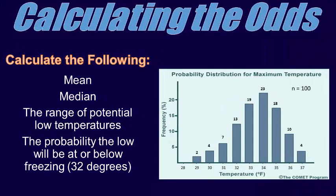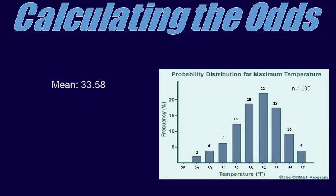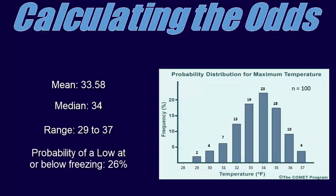Here is a look at the forecast low temperatures from 100 models. Take a moment to see if you can calculate the following: the mean, the median, the range of potential low temperatures, and the probability that the low will be at or below freezing, which is 32 degrees Fahrenheit. In this example, the mean is 33.58 degrees and the median is 34 degrees. This means that barring any known model bias or local knowledge, our forecaster may forecast a deterministic low temperature of 34. The range of potential outcomes goes from 29 to 37. Of the 100 forecasts, only 26 have a value at or below freezing, so the probability of low temperatures at or below freezing is 26%. If this were the growing season, a forecaster would be unlikely to issue a freeze product, but would likely mention a low 20 to 30% chance of sub-freezing temperatures, mention temperatures ranging from the upper 20s to mid 30s, or both.